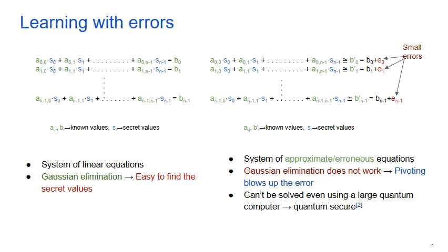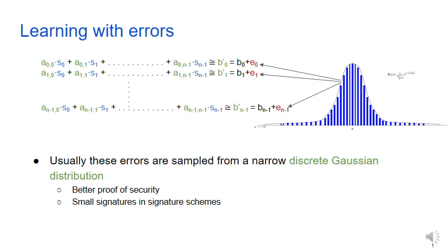This is why LWE is a very popular choice for constructing post-quantum cryptography. Usually, these small errors are sampled from a narrow discrete Gaussian distribution, mainly for better proof of security and small signatures in lattice-based signature schemes.